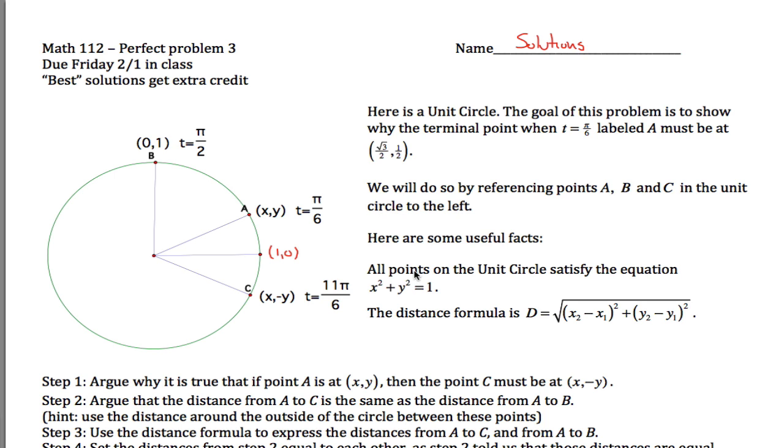Alright, here are our solutions to problem 3 for Math 112. The basic idea here is we want to prove that this point, labeled A, who is a distance around the circumference of the circle of pi over 6 from our starting spot here at (1,0), is equal to root 3 over 2, comma 1 half. These are cosine and sine of pi over 6, the terms we'll use later in the class. And the way we'll do that, we'll use a few facts.